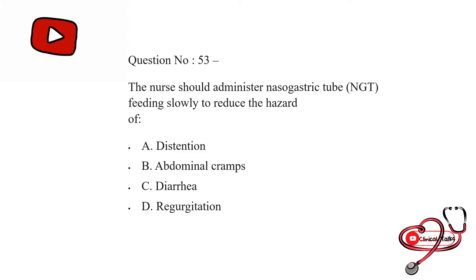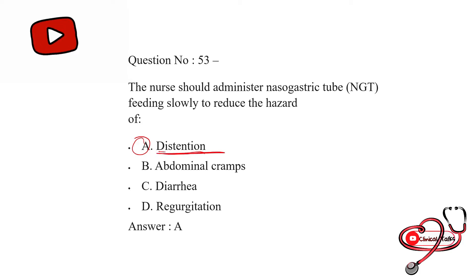The nurse should administer nasogastric tube feedings slowly to reduce the hazard of: option first: distension; second: abdominal cramps; third: diarrhea; last: regurgitation. The correct answer is A — to reduce the hazard of distension.